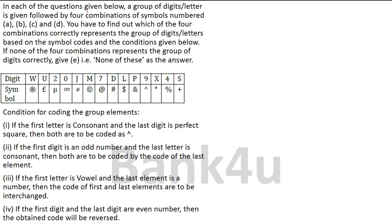In each of the questions given below, a group of digits or letters is given followed by four combinations of symbols numbered A, B, C and D. You have to find out which of the four combinations correctly represents the group of digits or letters based on the symbol codes and the conditions given below. If none of the four combinations represent the group of digits correctly, give E — that is 'none of these' — as the answer.